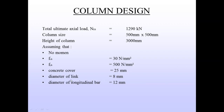The strength of concrete is 30 N/mm², steel strength is 500 N/mm², concrete cover is 25 mm, diameter of links is 8 mm, and diameter of longitudinal bar is 12 mm. In column design, the minimum diameter of longitudinal bar is 12 mm — we cannot use a longitudinal bar less than 12 mm diameter.